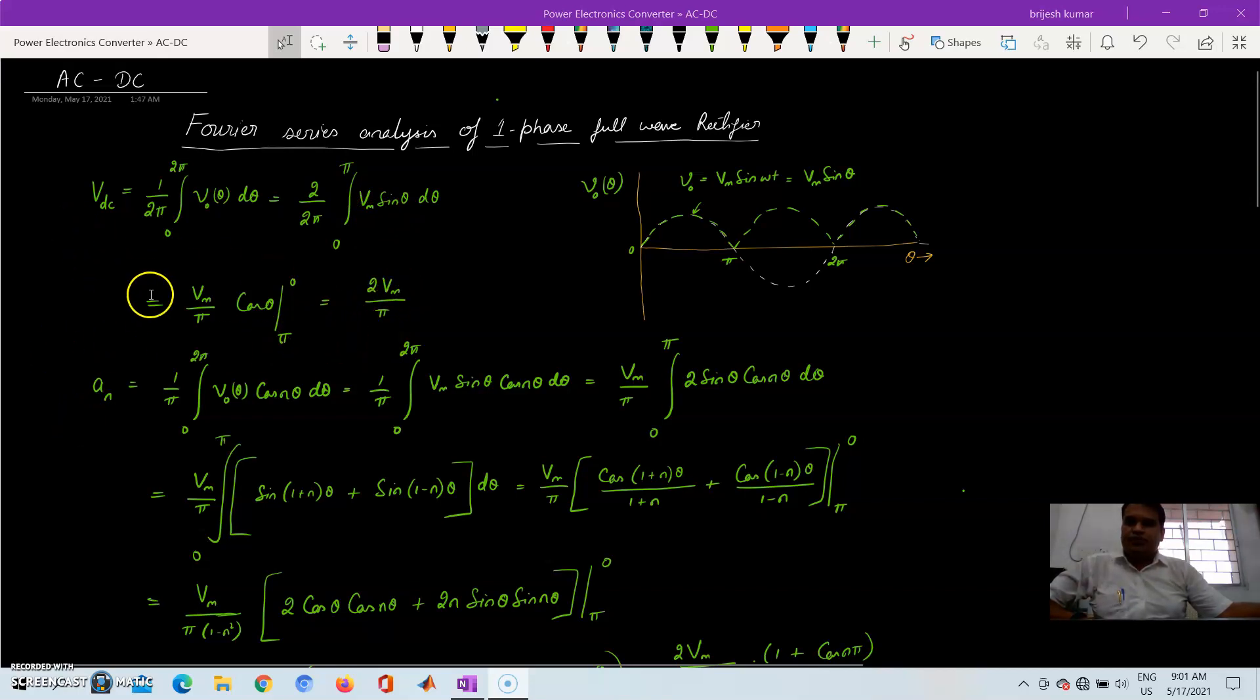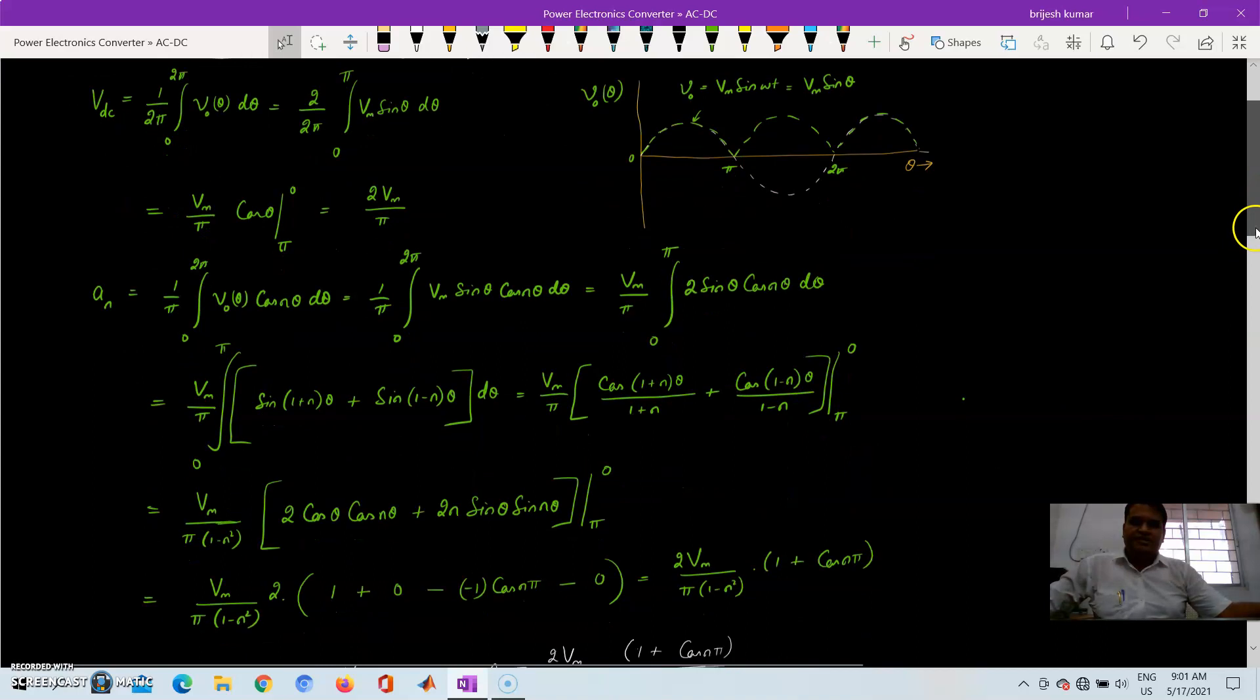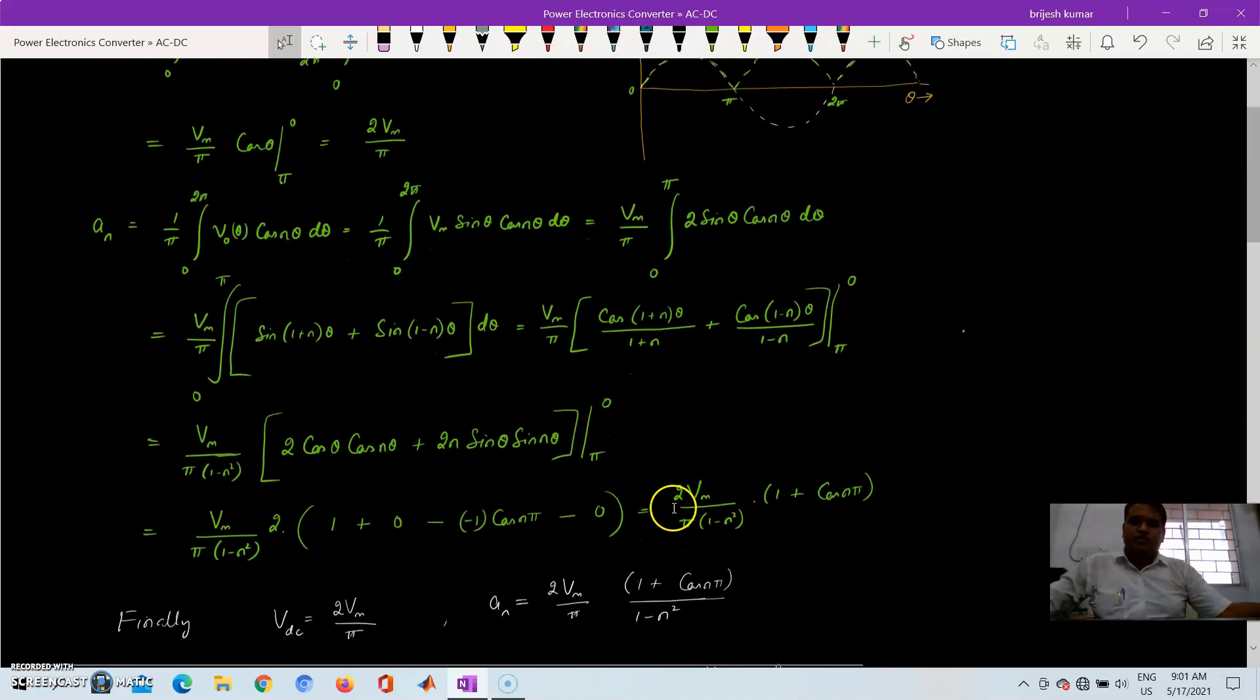You can see from this equation and Am is equals to 1 by π, 0 to 2π, V0 theta cos n theta d theta. So we substitute the value of V0 theta and then evaluate and finally the expression that we get is 2Vm by π, 1 by (1 minus n square), 1 plus cos n theta.